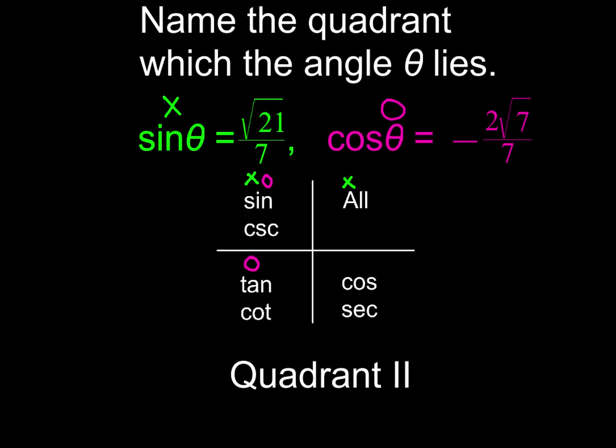So how'd you do? Did you get the x's and the o's in the right spot? Were you able to determine that quadrant two was the correct quadrant that makes each one of these two conditions true? If you were, good for you, you're a rock star. If you messed up, you probably just made a careless mistake. All right, so that's it for this video.